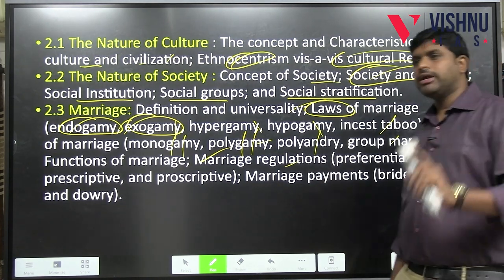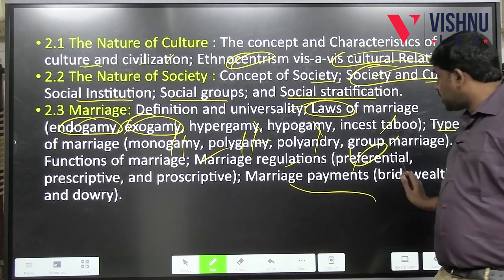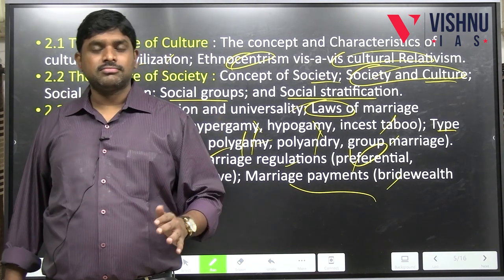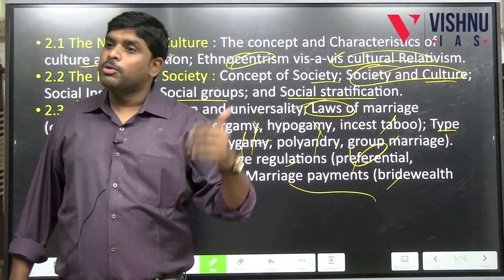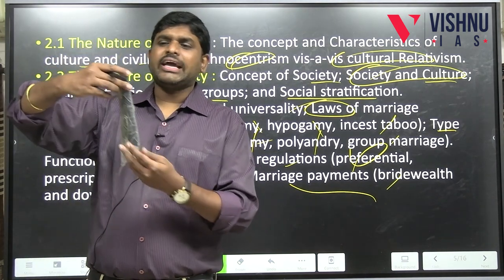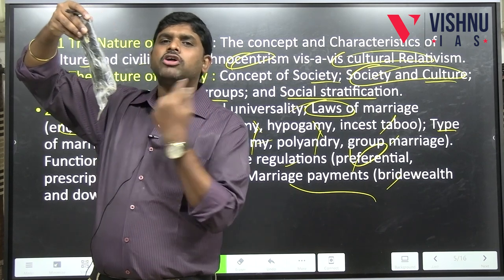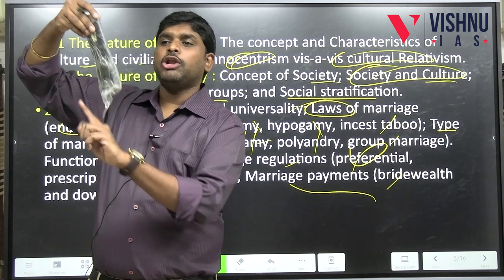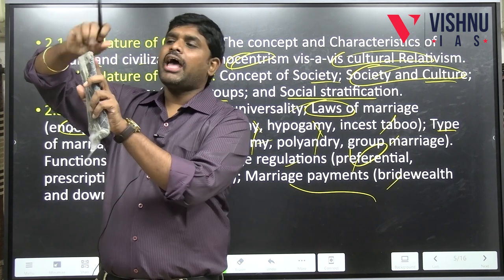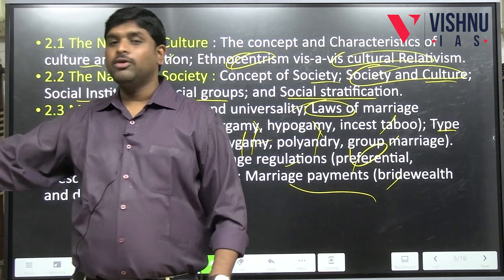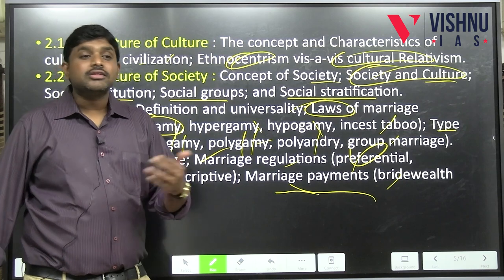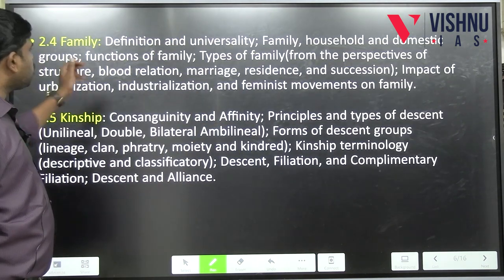Marriage is regulated through preferential, prescriptive, and proscriptive rules, plus marriage payments like bride wealth and dowry. There are various types including levirate, probationary marriage — where couples live together for some days first — and marriage by trial involving a greased pole: the boy who climbs it and retrieves the jaggery at the top earns the right to choose a bride.